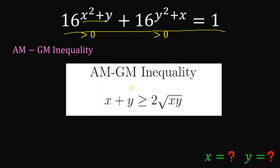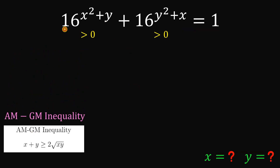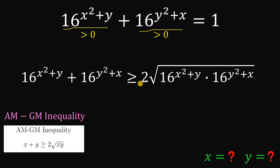The AM-GM inequality states that if x and y are both greater than 0, then x plus y is greater than or equal to 2 times the square root of x times y. The equality holds true when x is equal to y. Let's use this AM-GM inequality to answer this question. Applying it, since 16 raised to the power of x squared plus y and 16 raised to the power of y squared plus x are both greater than 0, we can say their sum is greater than or equal to 2 times the square root of their product.